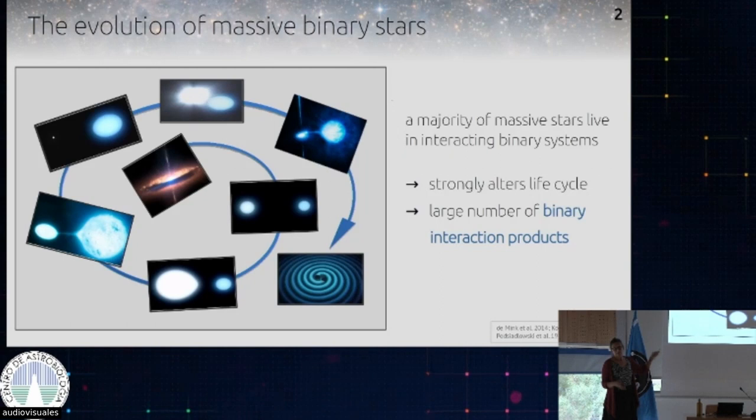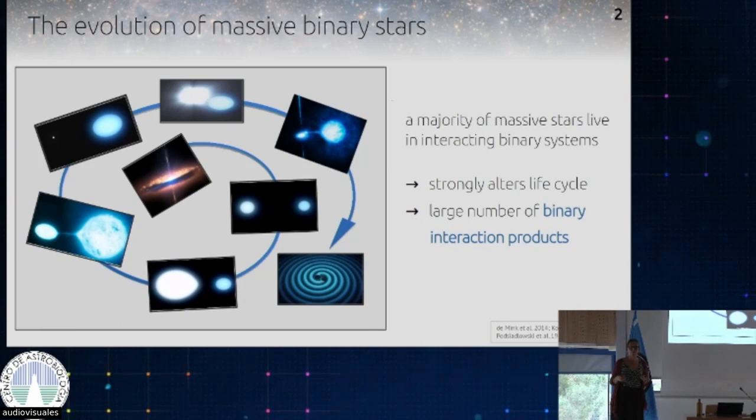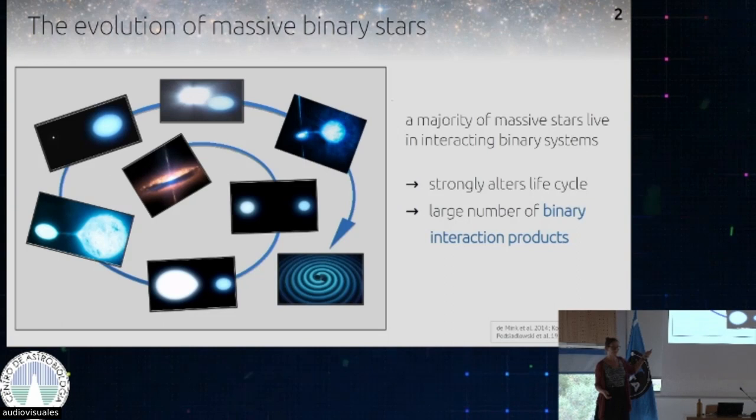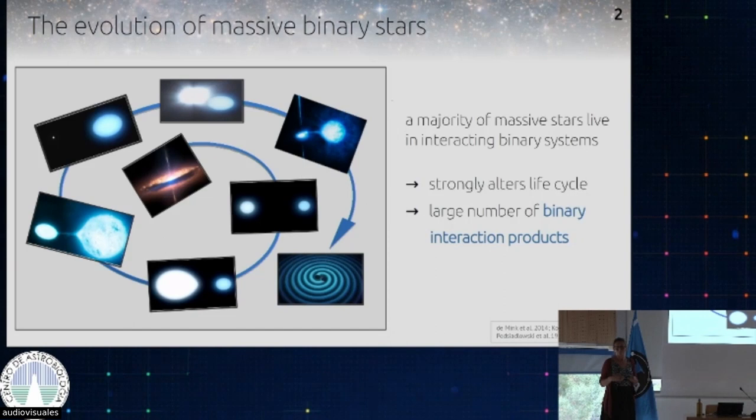It might turn into a neutron star or black hole, or end up as something like an X-ray binary system. And depending on the configuration of the system, what could eventually happen is that the system becomes a gravitational wave source if there are two compact objects close enough. So that linear evolution I showed in the first slide is actually not true — there are many complications, and this is just one of many channels that makes stellar evolution very complicated.